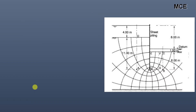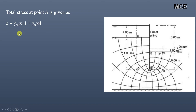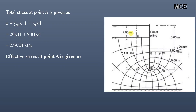The total stress at point A is given as the saturated unit weight of soil multiplied by the distance of point A from the ground level, which is 11 meters, plus the unit weight of water multiplied by the depth of water above the ground level, which is 4 meters. So total stress at A equals 20×11 plus 9.81×4, which equals 259.24 kilo Pascal. The effective stress at A is total stress minus pore water pressure, which equals 259.24 minus 121.64, giving 137.6 kilo Pascal.